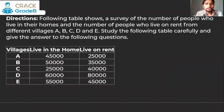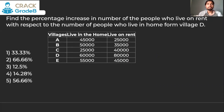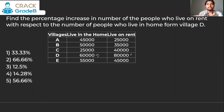The table shows a survey of the number of people who live in their homes and the number of people who live on rent from different villages A to E. Question 1: Find the percent increase in the number of people who live on rent with respect to home in village D. In D, there were 60,000 on home and 80,000 on rent. They are asking what is the percent increase — basically, 80,000 is what percent more than 60,000.